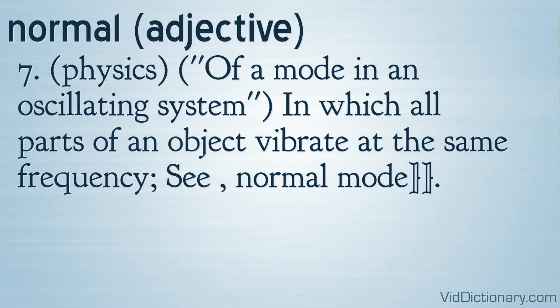Definition 7: Physics — of a mode in an oscillating system, in which all parts of an object vibrate at the same frequency. See: normal mode.